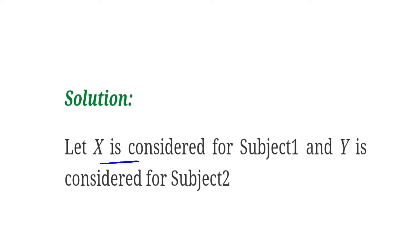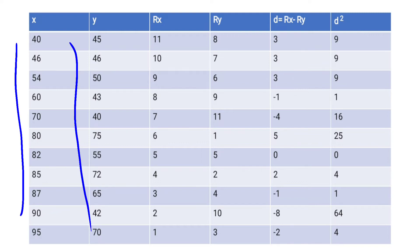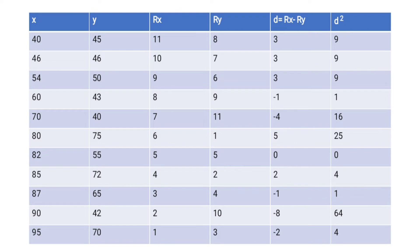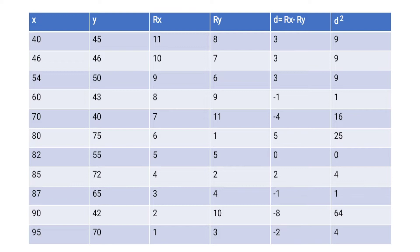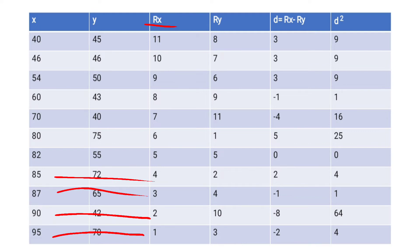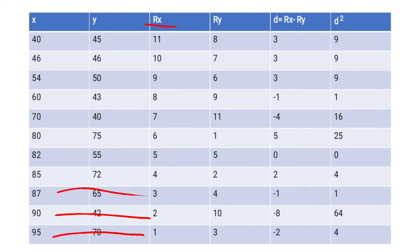X is considered for Subject 1 and Y for Subject 2. After writing out the X and Y values from the given data, you have to find out the Rank of X and Rank of Y. For Rank of X, the highest mark 95 gets 1st rank, 90 gets 2nd, 87 gets 3rd, 85 gets 4th, 82 gets 5th, 80 gets 6th, 70 gets 7th, 60 gets 8th, 54 gets 9th, 46 gets 10th, and 40 gets 11th rank.